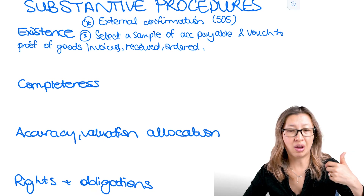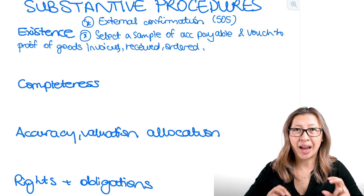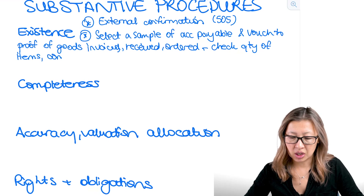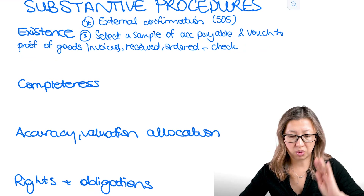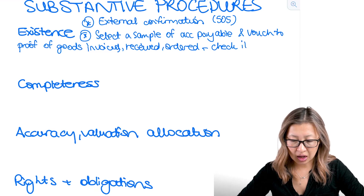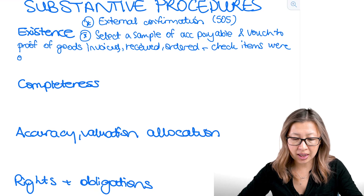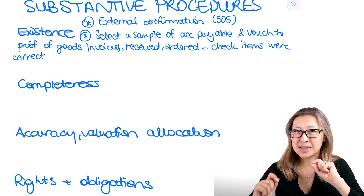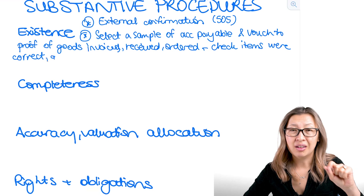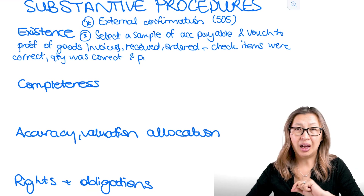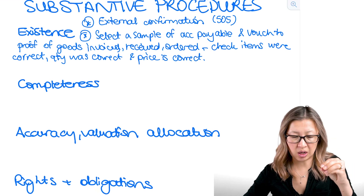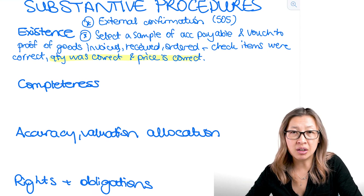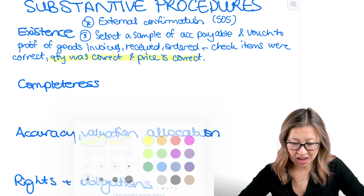Did we receive the goods? Have we got a purchase order? We're checking that substantively the account is correct. They might have invoices, we might have a monthly statement, but we want to make sure that the goods invoiced or received were the ones we ordered. We also want to check that the items were the correct quantity, the correct items, and that the price is correct. That pricing part is going to come in when it comes to the accuracy, valuation, and allocation component — so we're doing two tests in one, checking that quantity and price match the total of the invoice or statement.